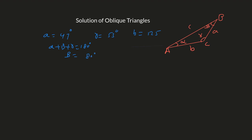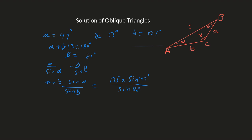Now use the law of sines: a over sine alpha equals b over sine beta. The value of a equals b times sine alpha over sine beta. Plugging in the values: b is 125, times sine of 47 degrees, over sine of 80 degrees. Use your calculator and you get a equals 92.84.